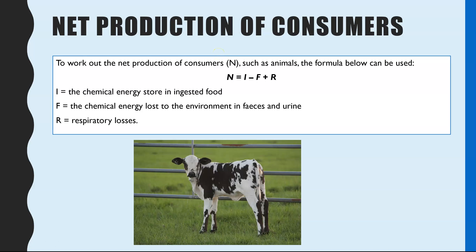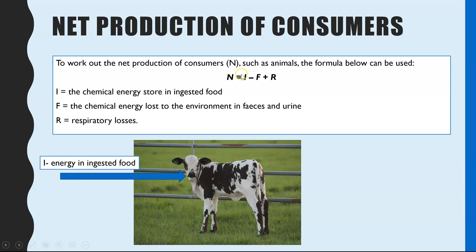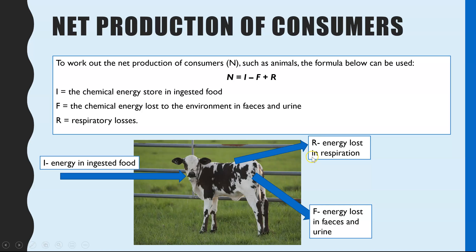Another calculation you could be asked is one to work out the net production of consumers, rather than plants. This formula is on the new spec, so stating or using it in an exam could be worth a mark. It looks at the energy entering and exiting the consumer and how much is left to convert into new biomass. I represents energy ingested in food; you then subtract energy lost in respiration and energy lost in faeces and urine. Plants don't produce faeces and urine, which is why there's an extra component here. N, the net production of consumers, is what remains when you take what goes in minus what comes out.